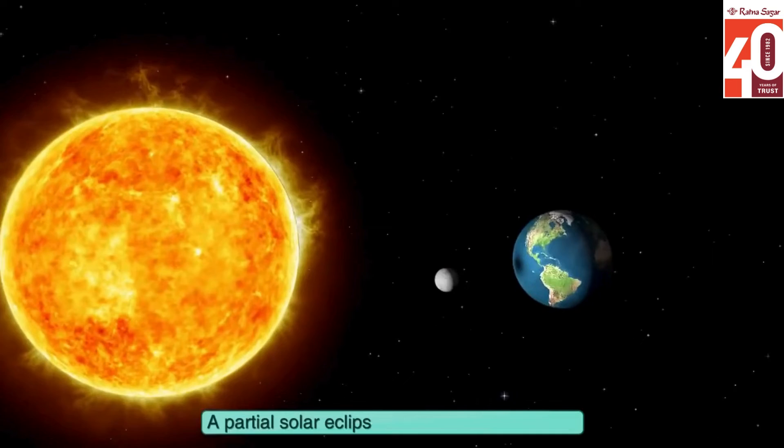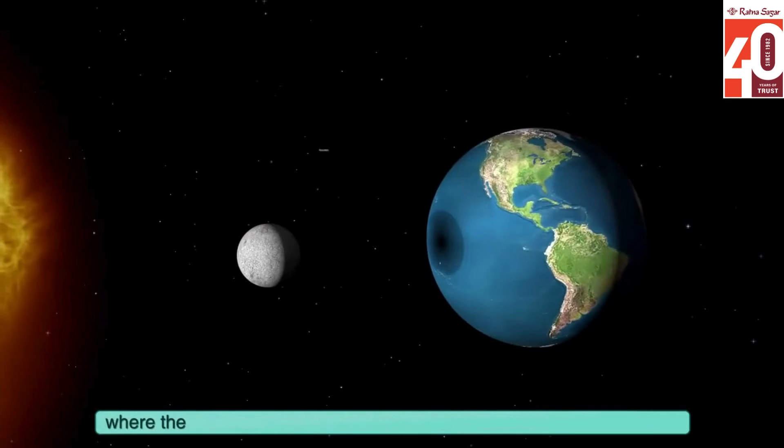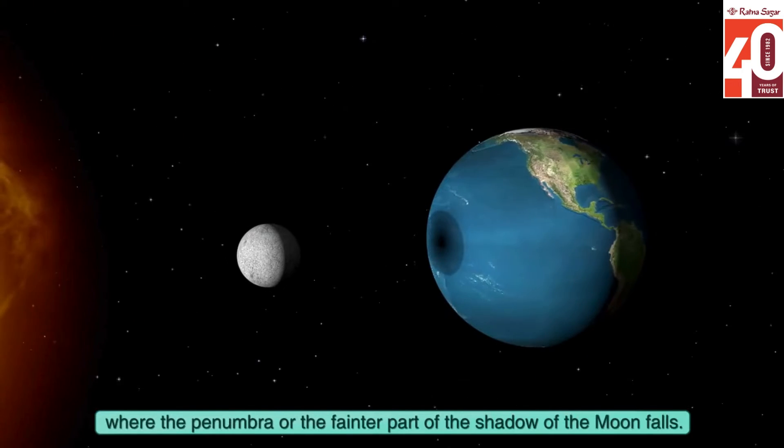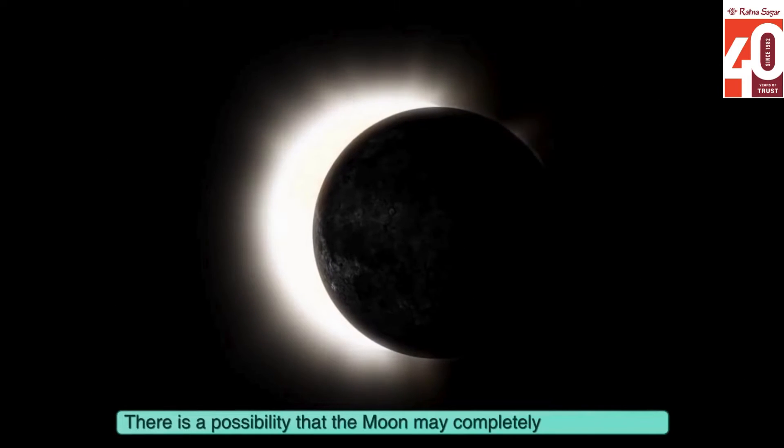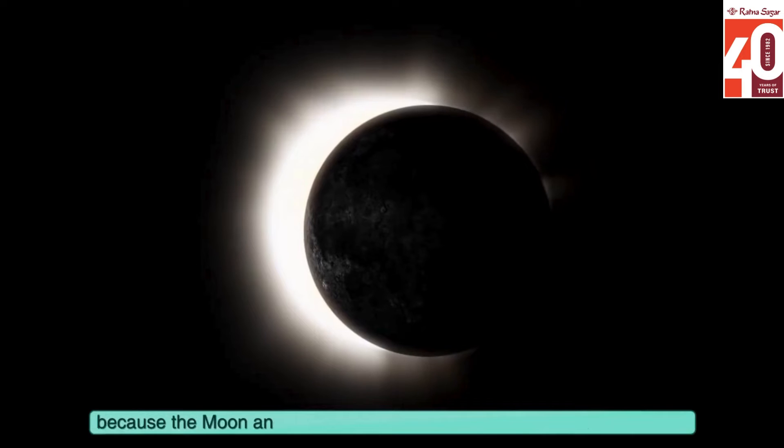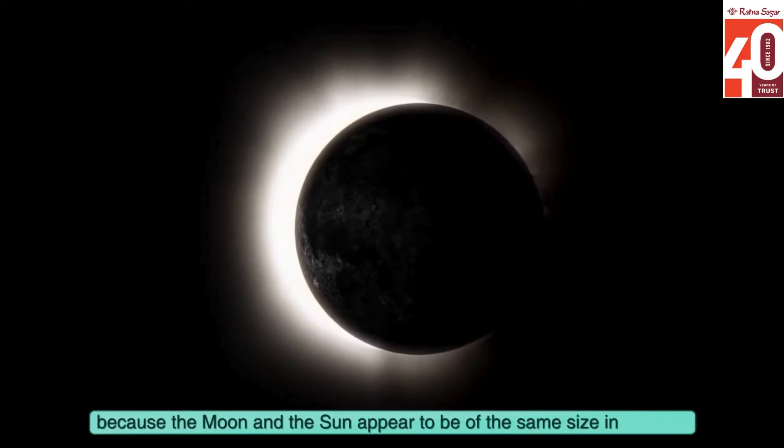A partial solar eclipse can be seen in regions where the penumbra, or the fainter part of the shadow of the moon, falls. There is a possibility that the moon may completely cover the sun because the moon and the sun appear to be of the same size in the sky.